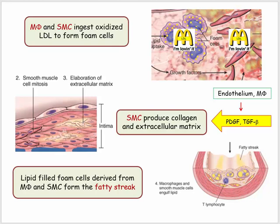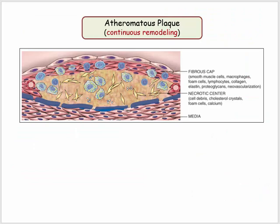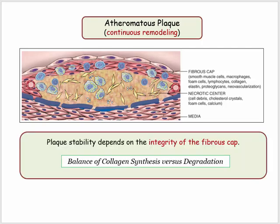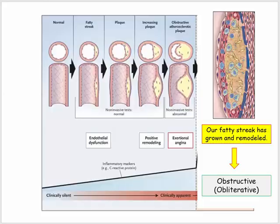The initial gross lesion in this process is the development of an intimal fatty streak. Over time, as a result of ongoing remodeling, the end result is an atheromatous plaque with a characteristic fibrous cap. The cap itself is continually remodeled, with a balance of collagen synthesis and degradation determining the mechanical strength and thereby the stability of the plaque.